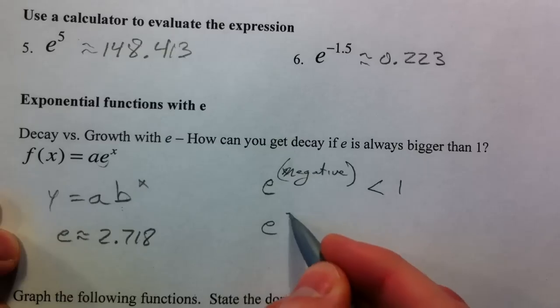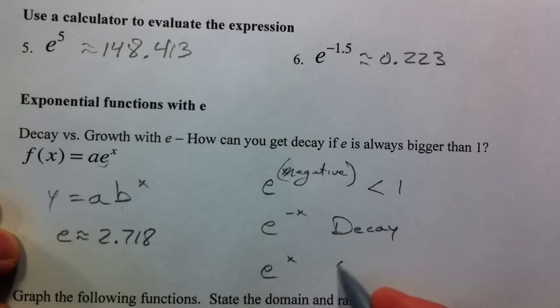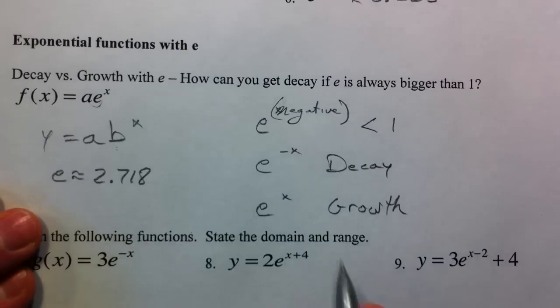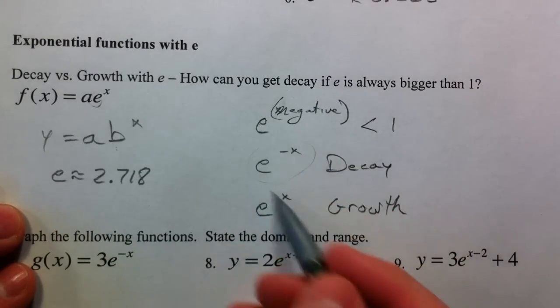We're forced to take the reciprocal, and so e to a negative power will be less than 1. And so e to a negative x is going to be decay, where e to a positive x is going to be growth. That's the thing you have to look out for because e is always going to be bigger than 1.